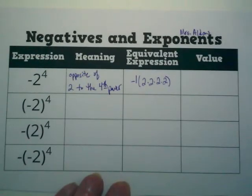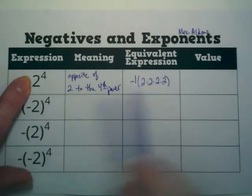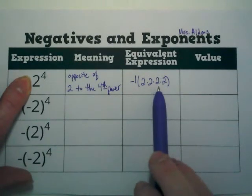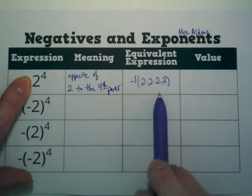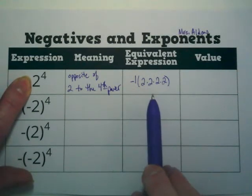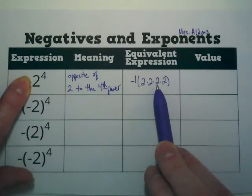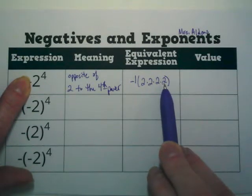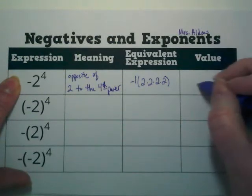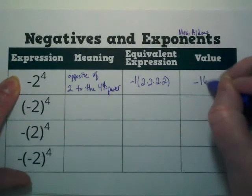If 2 to the fourth power is 2 times 2 times 2 times 2, 2 to the fourth power would be what value? 16. 16, because 2 times 2 is 4, 4 times 2 is 8, 8 times 2 is 16. But this is the opposite of that, so our answer is negative 16.